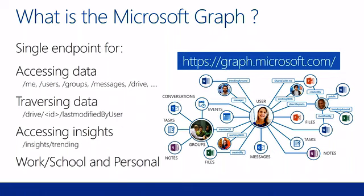The Microsoft Graph is a single endpoint for lots of stuff — a single endpoint to access data. You can go into the graph and see what data is around you, what data is around any user: your messages, the content of your OneDrive, the content of your SharePoint files, your OneDrive notes, your Excel sheets. You can request pretty much any resource that exists currently in the Office 365 platform.